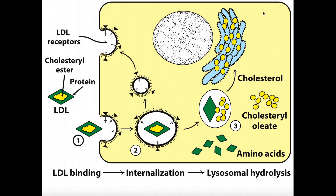For example, if this were a cell in the testes of males, the ovaries in females, or even the adrenal cortex, there are enzymes in the smooth ER — and also some of the mitochondria — that can process cholesterol and turn it into different things like progesterone, cortisol, testosterone, estradiol, and so on.